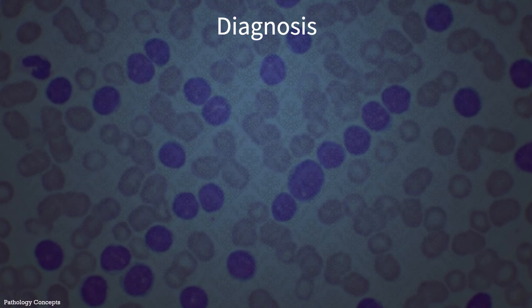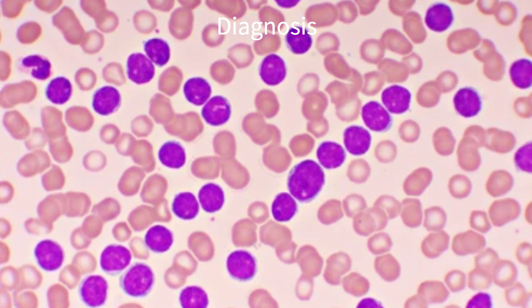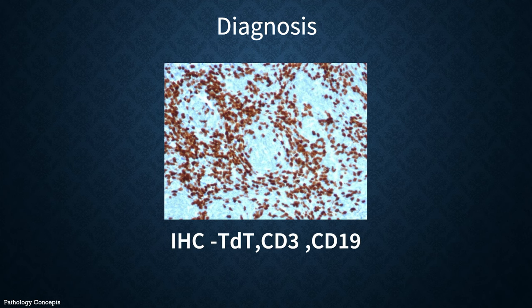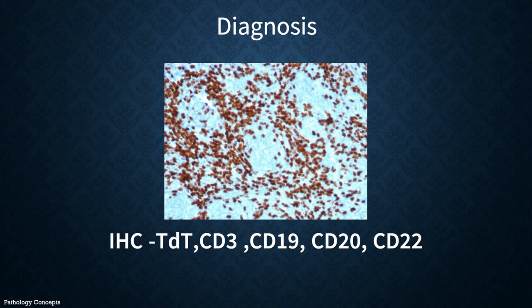Blasts represent the proliferation of typically small to medium-sized primitive cells, either B cell or T cell precursors, but they are morphologically indistinguishable. Histochemical studies include staining for terminal deoxynucleotidyl transferase (TdT), which is positive in cells of lymphoid origin. Detection of specific immunophenotypic markers such as CD3, CD19, CD20, and CD22 are essential for classifying acute leukemia.